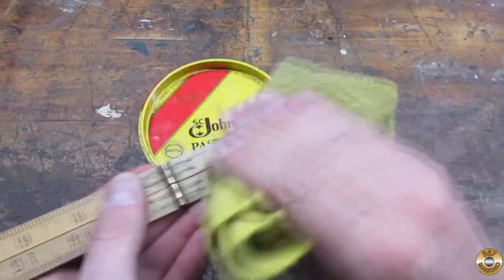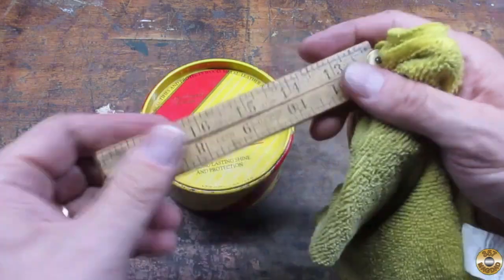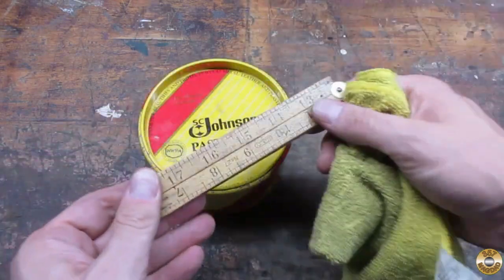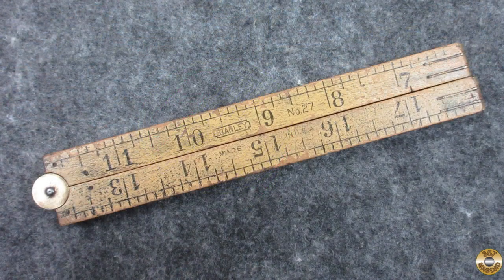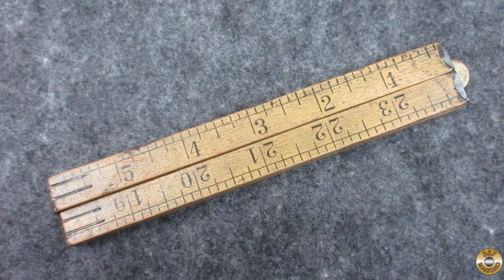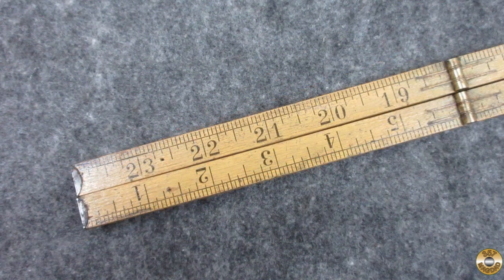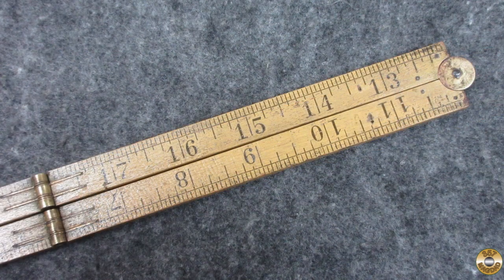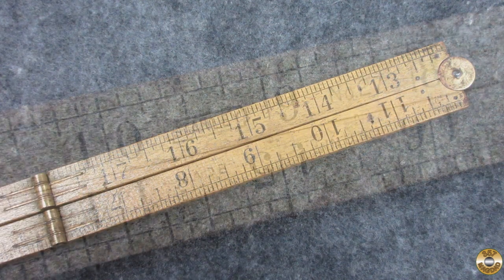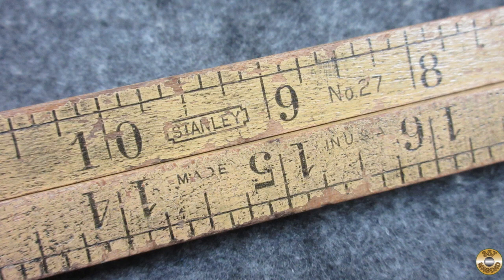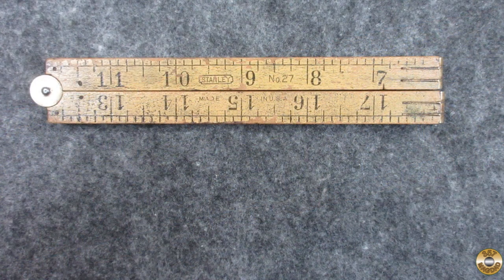I gave it a couple coats of paste wax to help protect it. Gradually escalating the intensity of my cleaning method paid off. I feel like this was good practice for when I may have to clean up more of these types of rulers. I hope you enjoyed the video.